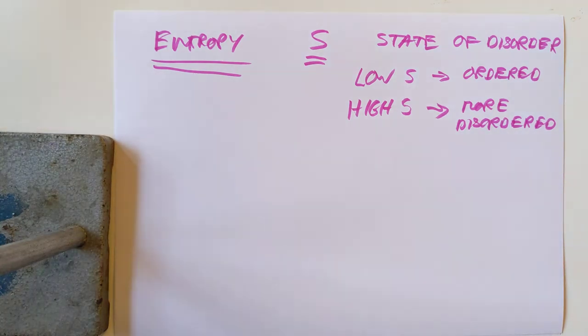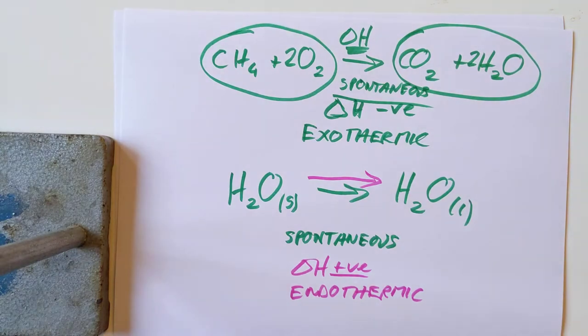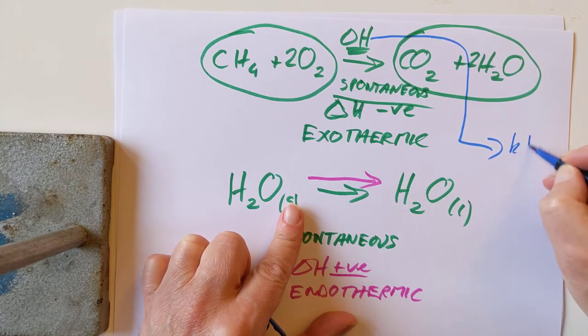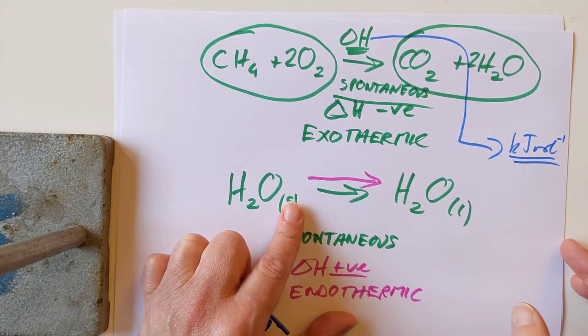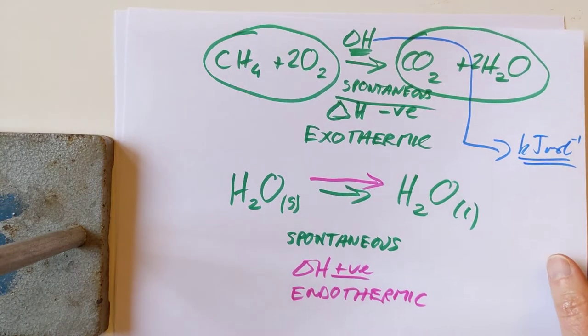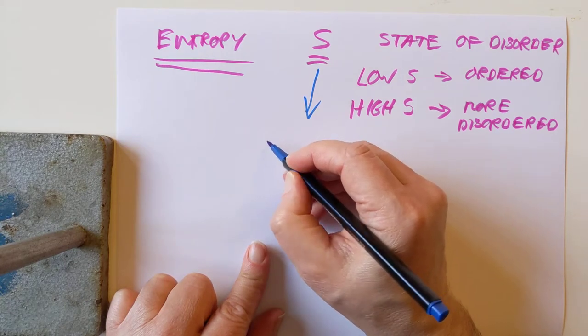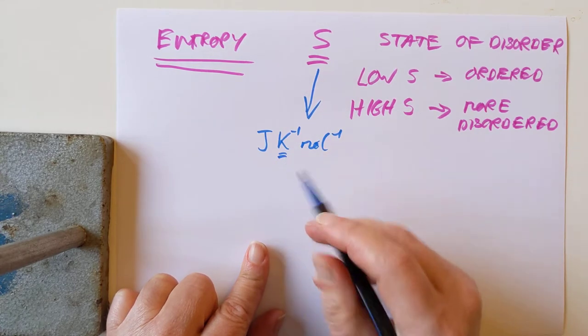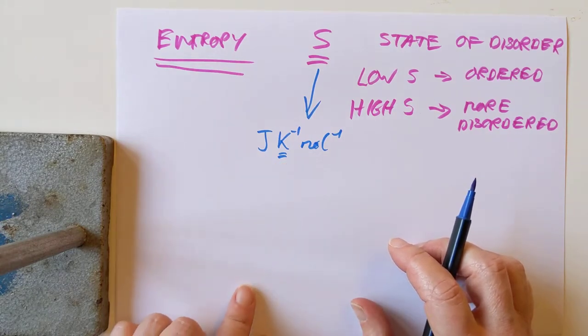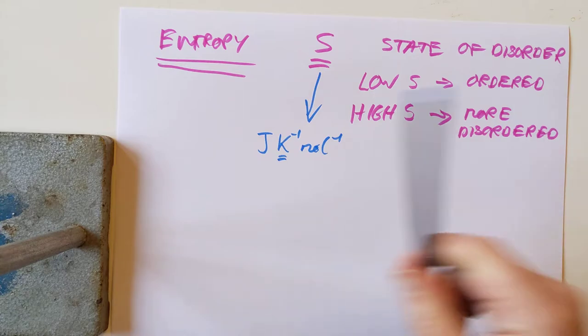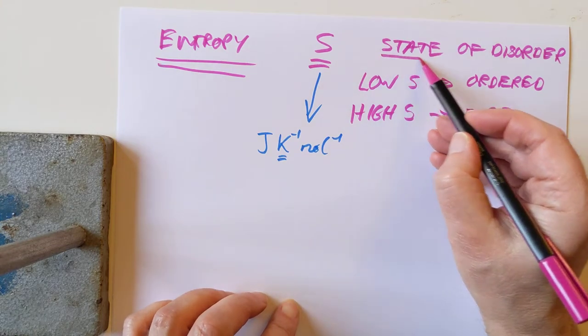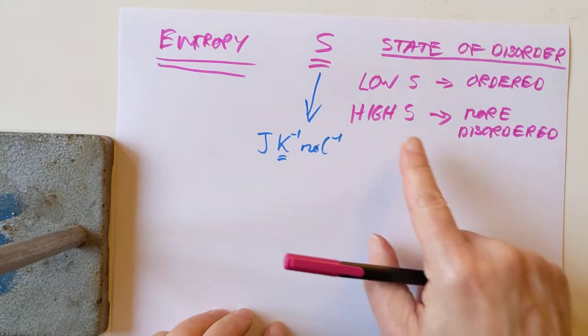Low entropy values are highly ordered, nice and neat and tidy and structured. Higher S values are less ordered or more disordered, more random. Before we go any further, I should talk about units, because there is a classic trap here from the SQA. Delta H is kilojoules per mole. S, entropy, tends to be measured in joules per Kelvin per mole.